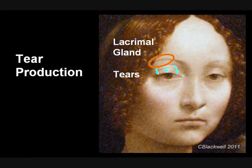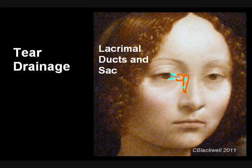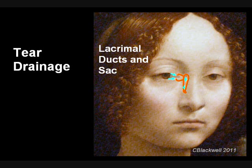The aqueous is produced by the lacrimal gland, which is located in the eye socket under the brow. The tears descend from the upper conjunctiva and wash over the eye. Then the tears are collected into the upper and lower tear ducts, which connect to the lacrimal sac, which in turn drains into the upper nasal cavity. That is why, when you cry, your nose runs, or when you put drops in your eyes, sometimes you can taste them in the back of your throat.